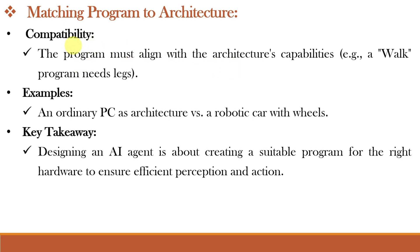The architecture should be compatible with the agent program. For example, a program that tells an AI agent to walk needs an architecture with legs. Different agents have different architectures — like a computer that runs common programs, or a specifically programmed robot with wheels. The robot with wheels will run well on its specific program running on an embedded chip compared to a general computer. The key idea is that the right program must be paired with the right hardware to work correctly.